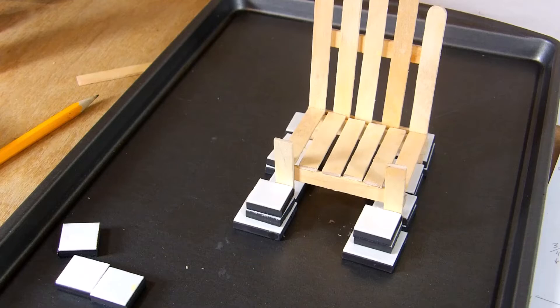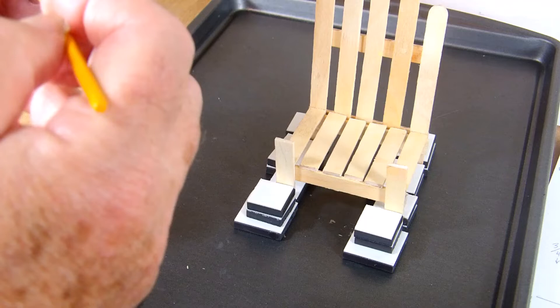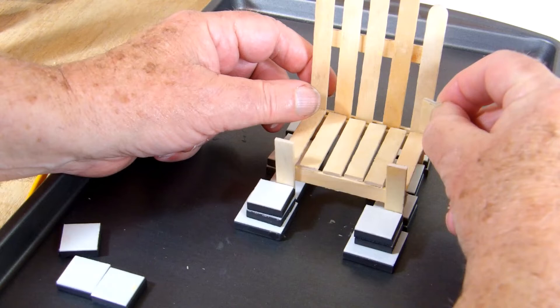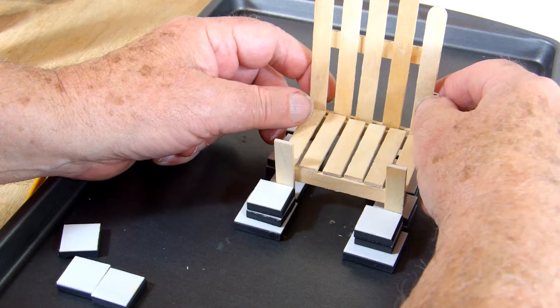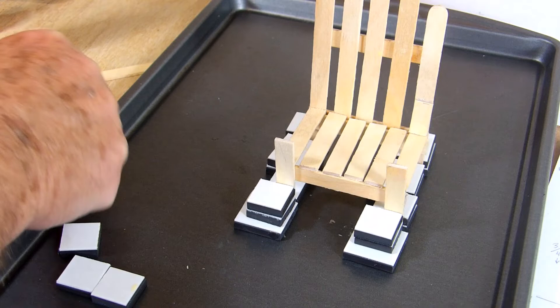So the next thing we'll do is put the arms on the seat. For that we have these two pieces, and they go on to support the arms. I'll put one on, it goes right here, right up flush against that, so that the armrest can rest on it and be glued in place. And we'll do the other one.